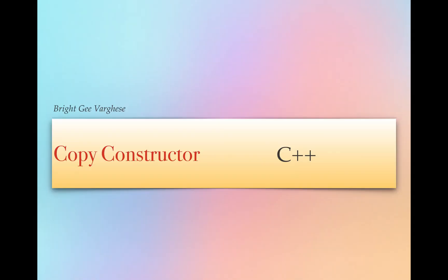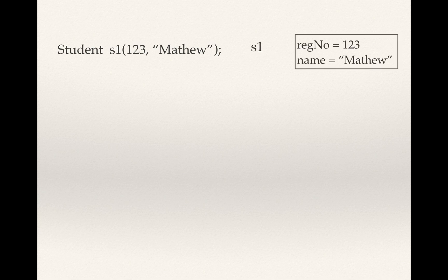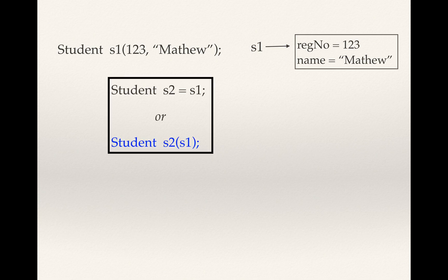In this video I am going to illustrate how we can define our own copy constructor in C++ programming language. Suppose we have a class called Student with some attributes: register number and name. We can create an object like this, visualized as s1 with register number 123 and name Matthew.